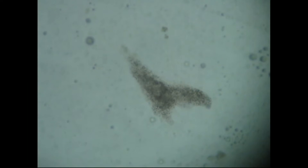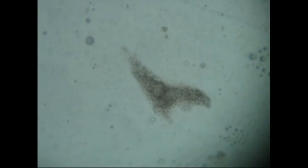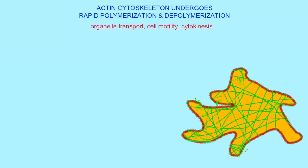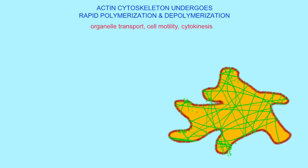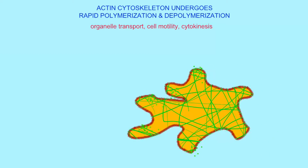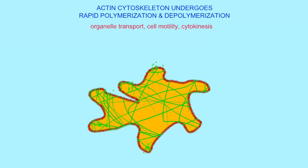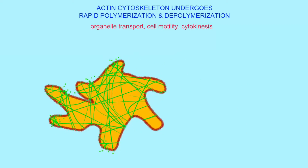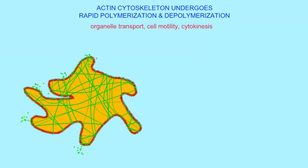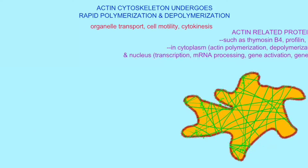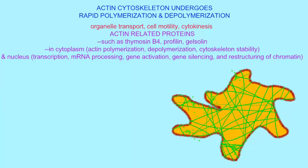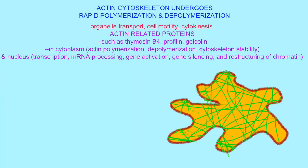About 15% of the intracellular protein in an amoeba can be actin, and many cells, including human white blood cells, move in an amoeboid fashion, in which the cytoskeleton can be rapidly assembled and disassembled. This is because there are a variety of actin-related proteins which assist in these processes.